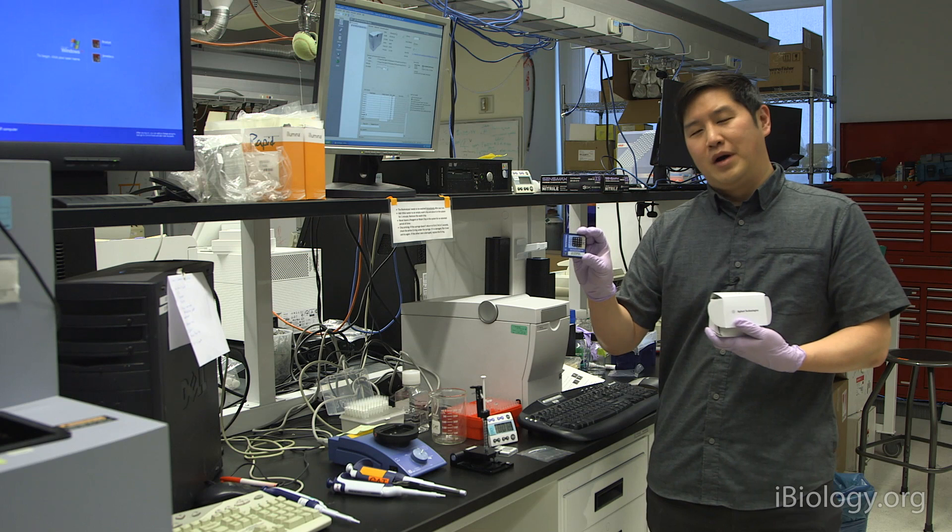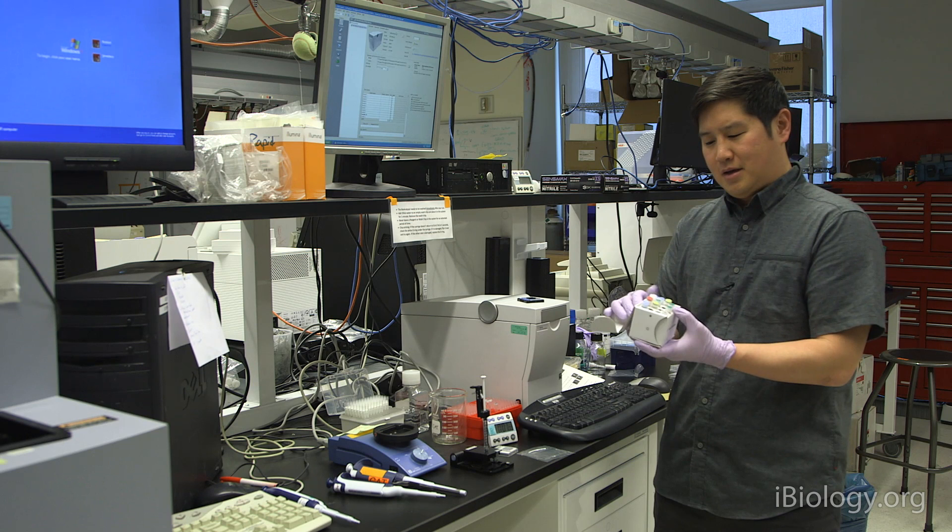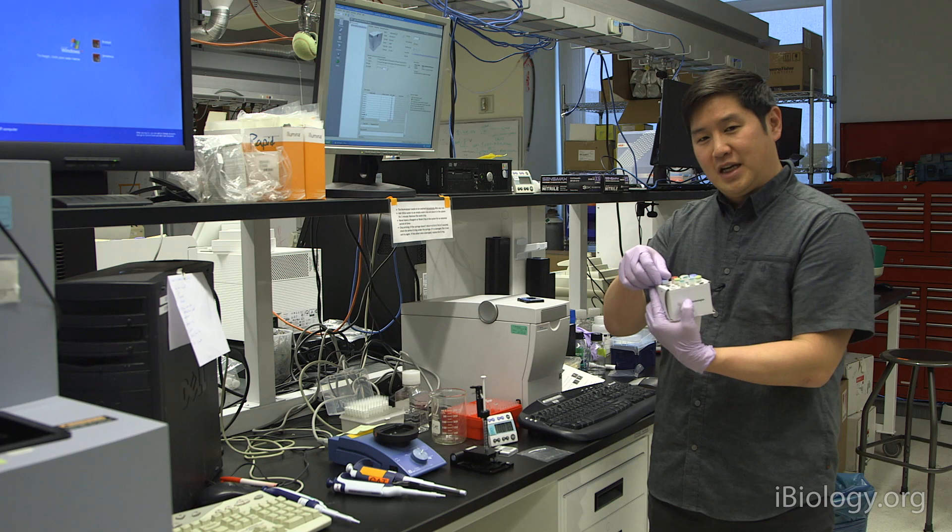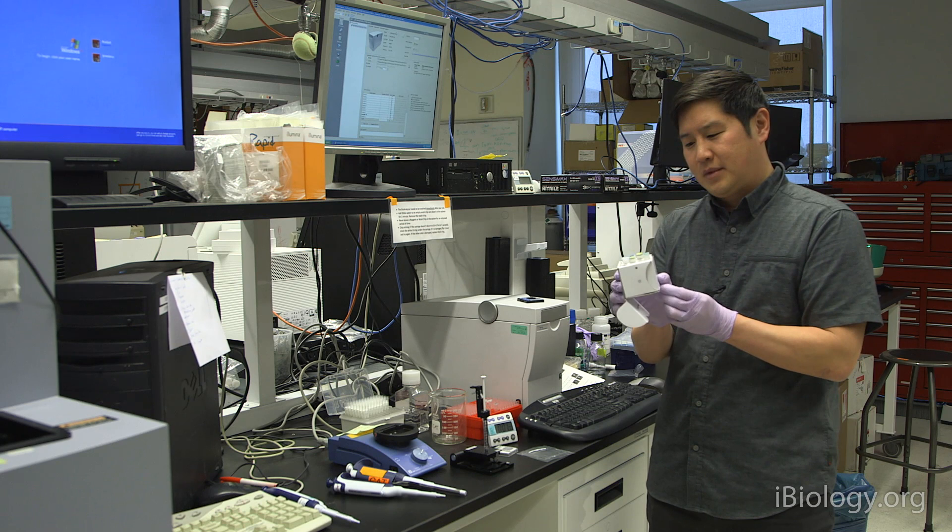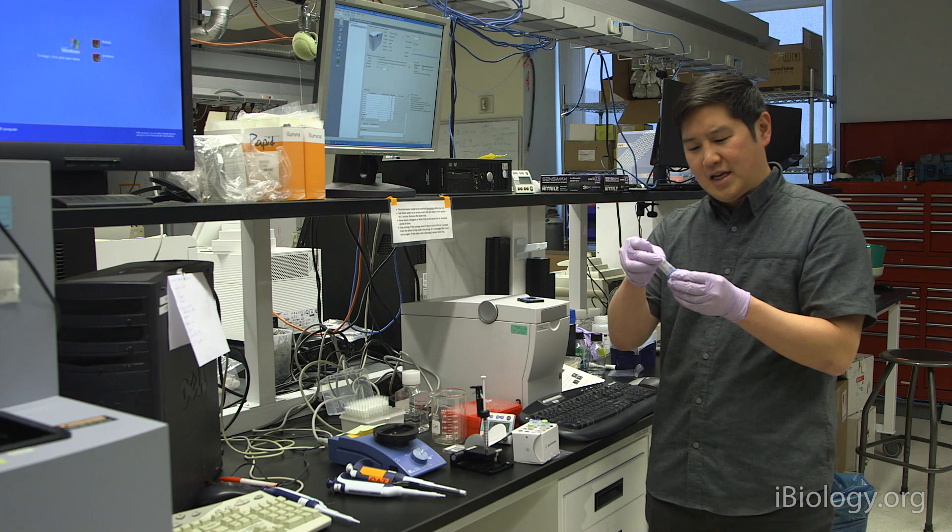All the reagents for the kits come in a small box like this that's kept in the cold room, and they all come with a pack of chips that are at room temperature. Once you open up this box, and today we're going to be going over the DNA high sensitivity kits, you'll see a set of reagents in here. The reagents that you'll need to prepare the gel dye mixture ahead of time are a dye, the gel, and a spin filter.